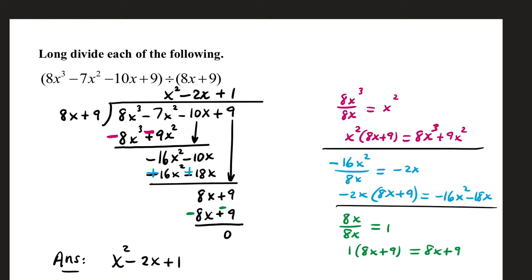Long divide each of the following. In this first example, we have a cubic dividend: 8x cubed minus 7x squared minus 10x plus 9, and we're going to divide that by the divisor 8x plus 9.